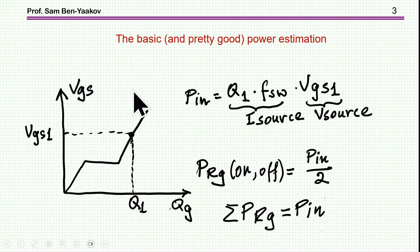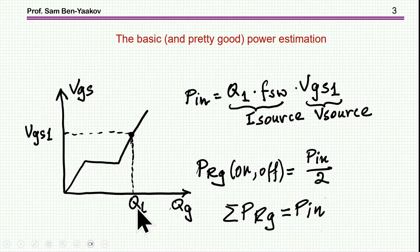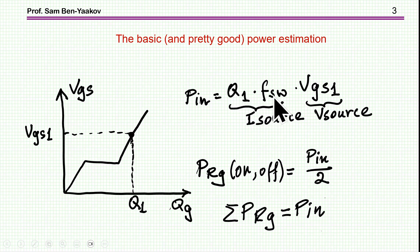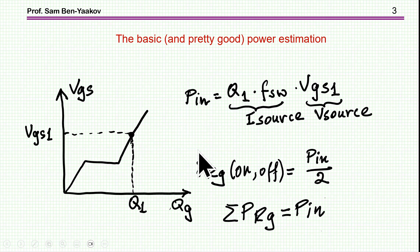The classical solution to this basic power estimation is to say the following: the total power going into the system is the end voltage times the total charge accumulated at the gate. This product is the total energy that came out of the source, and times the frequency gives the total power. Alternatively, charge times frequency is the average current, and times the voltage gives the power. We know that when charging a capacitor, half of the power goes into the capacitor and half is dissipated in the resistor. So the power dissipation of the resistor will be P_in over 2.